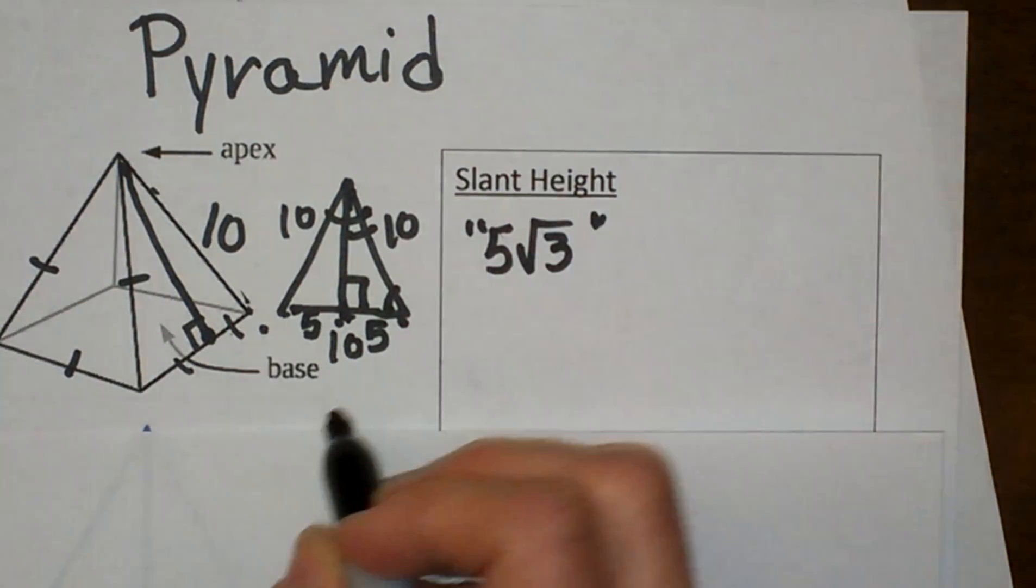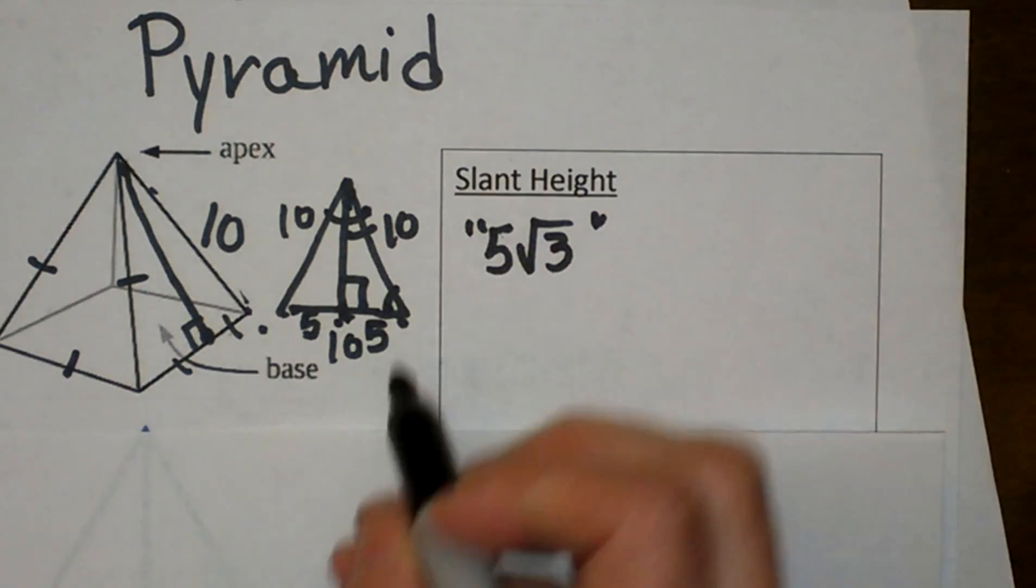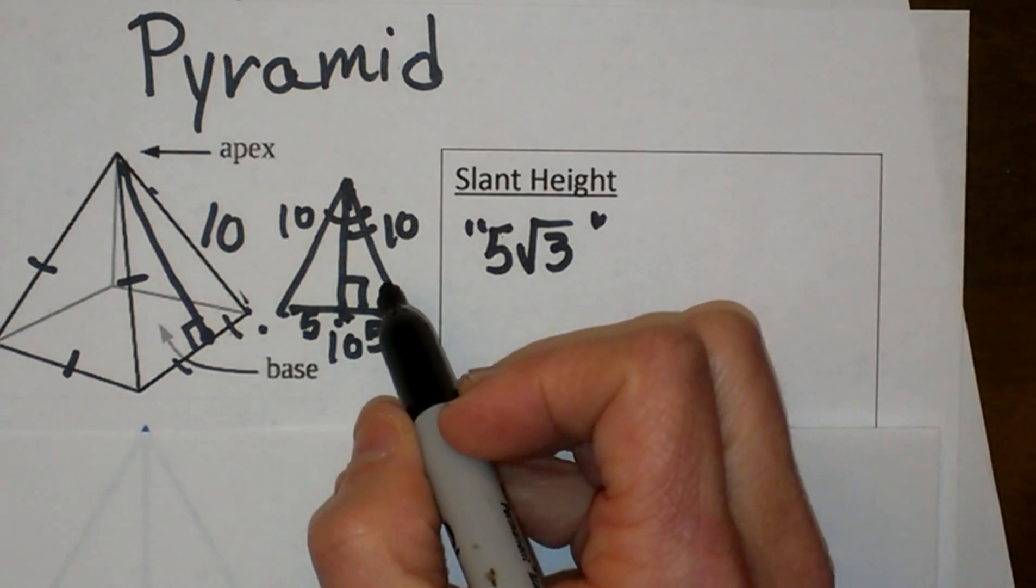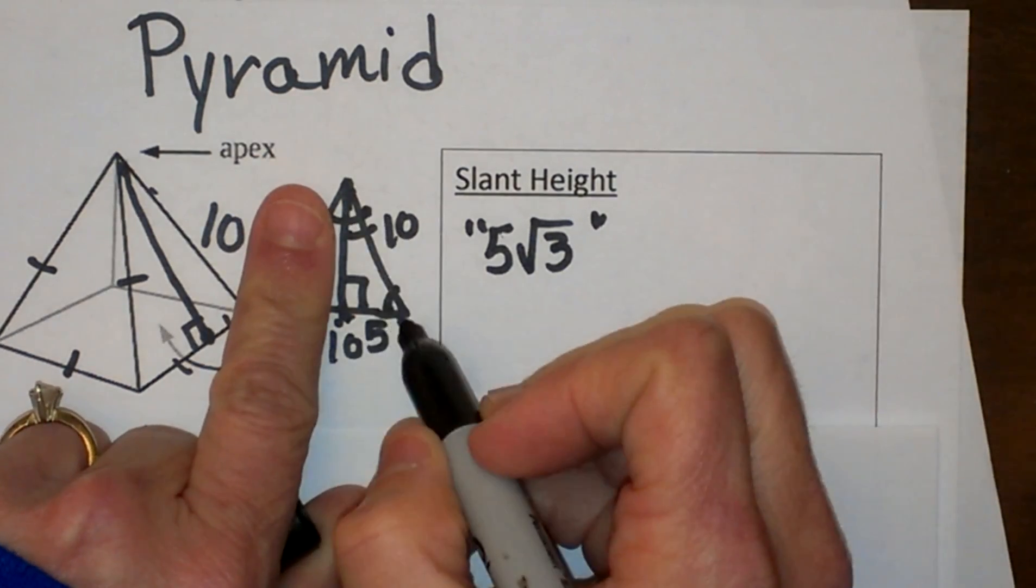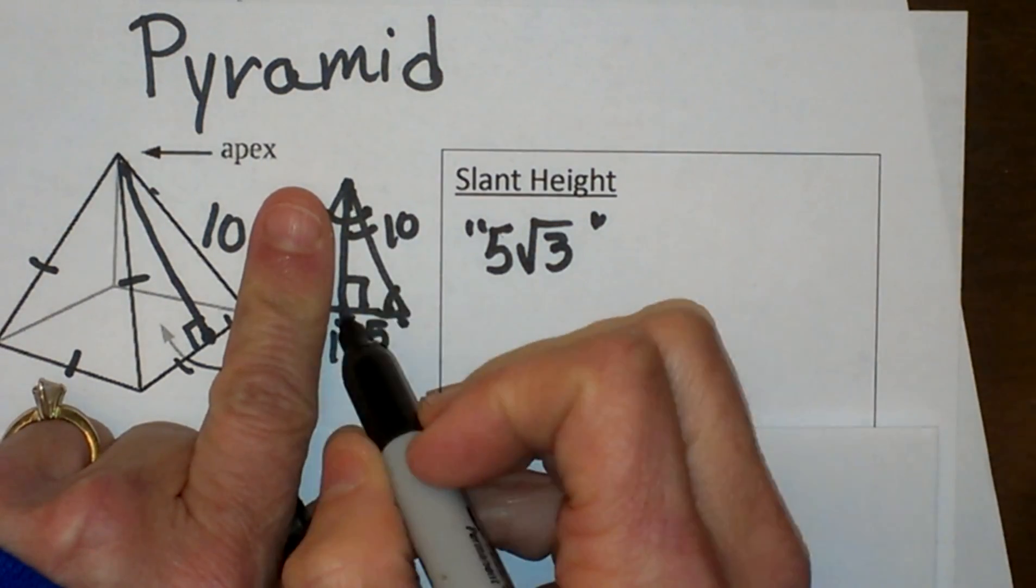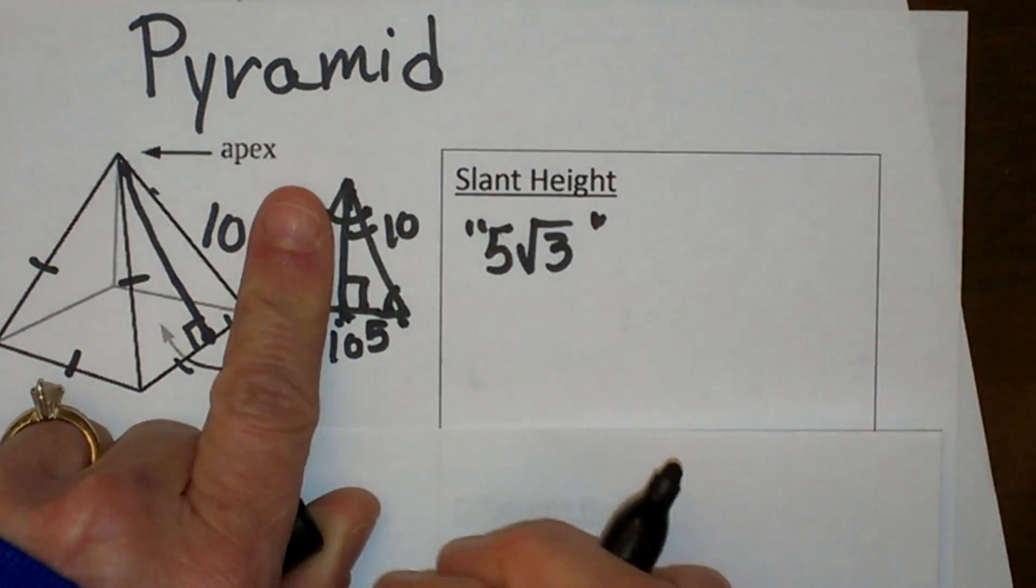And that is how I find it using my 30-60-90 rules. Now if we did not have a 30-60-90 triangle I could use the Pythagorean theorem. Notice I just have a right triangle. I know the hypotenuse and I know one of the legs. So you can also do it that way.